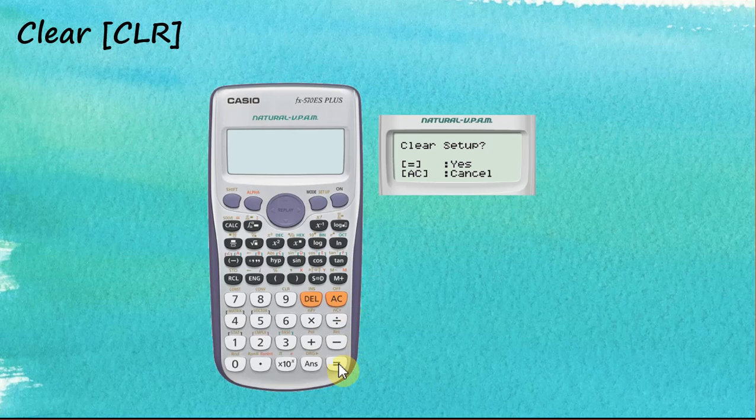Press this AC key to complete. Now you should realize that the radian has been changed to degree. This is the default unit and then the complex disappears. Because it has been cleared. However, the M is still here. It shows that the memory is still inside the calculator because we just cleared the setup.